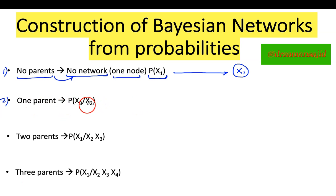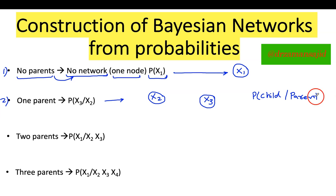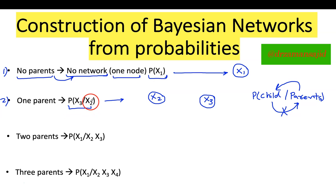In Case 2, there is one parent and we want to convert this probability into a Bayesian network. I have the probability of X3 given X2. Using the formula — child given parent — X2 is my parent and X3 is my child. So the direction should be from X2 to X3. That is how your Bayesian network for this probability should look.